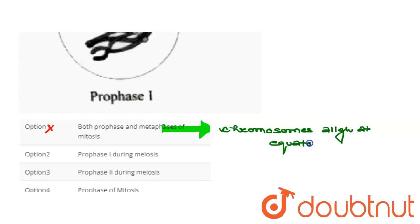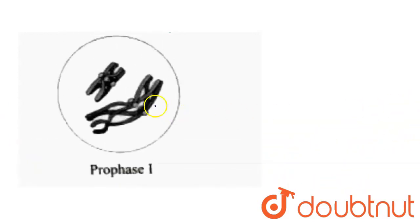we will see the second option: prophase 1 during meiosis. This is basically the answer. You can see this diagram given here. This is about prophase 1, and this is meiosis,